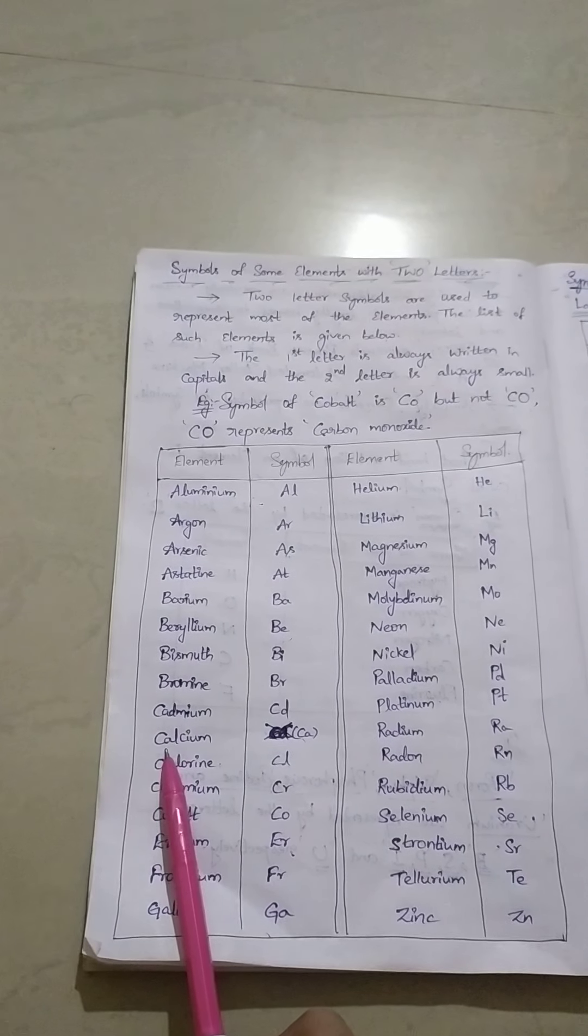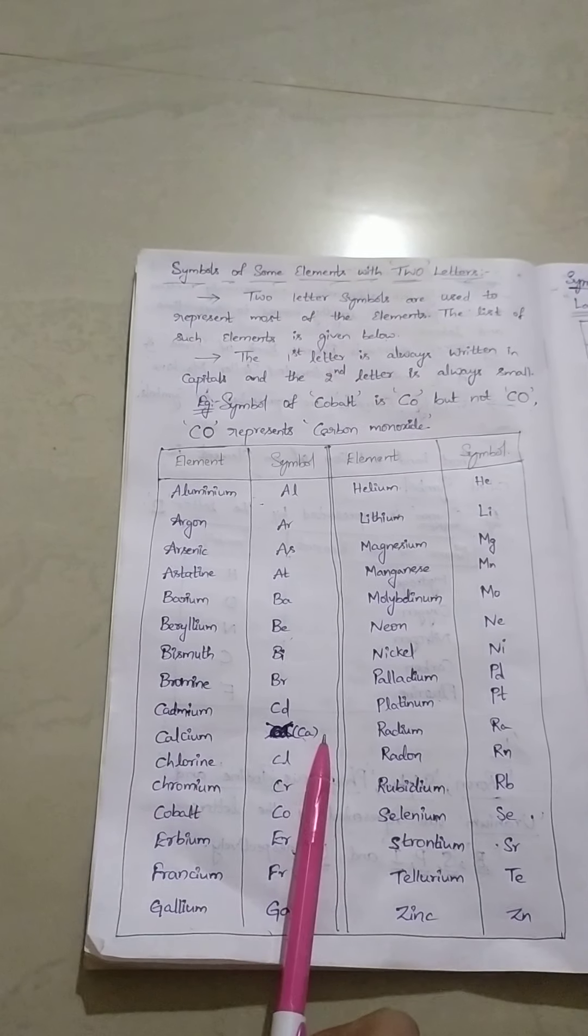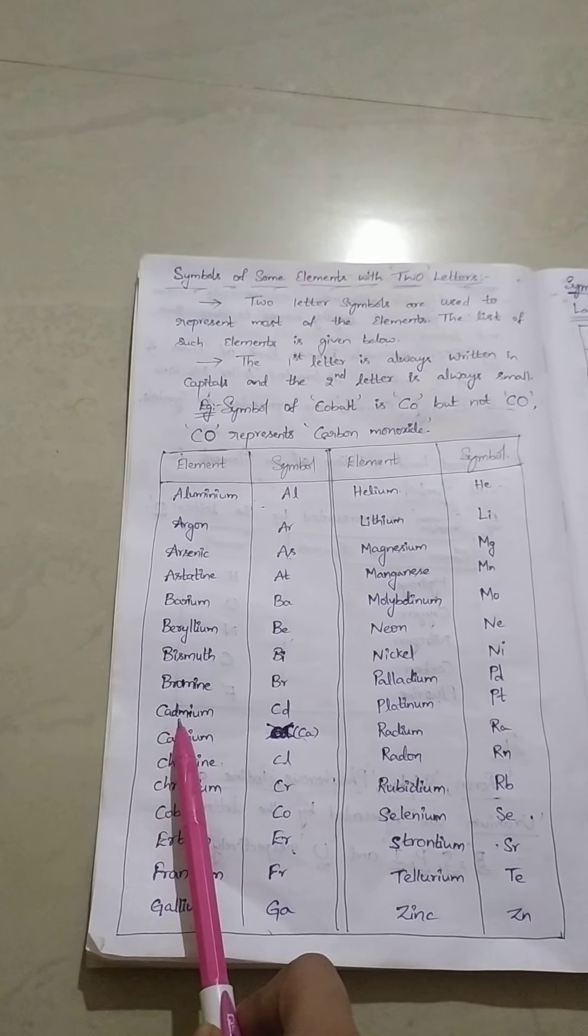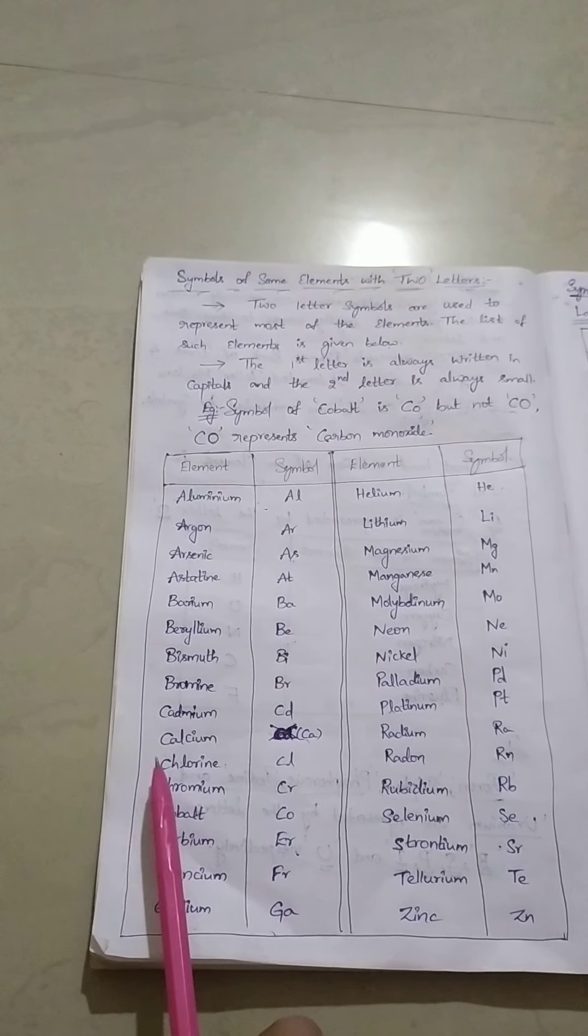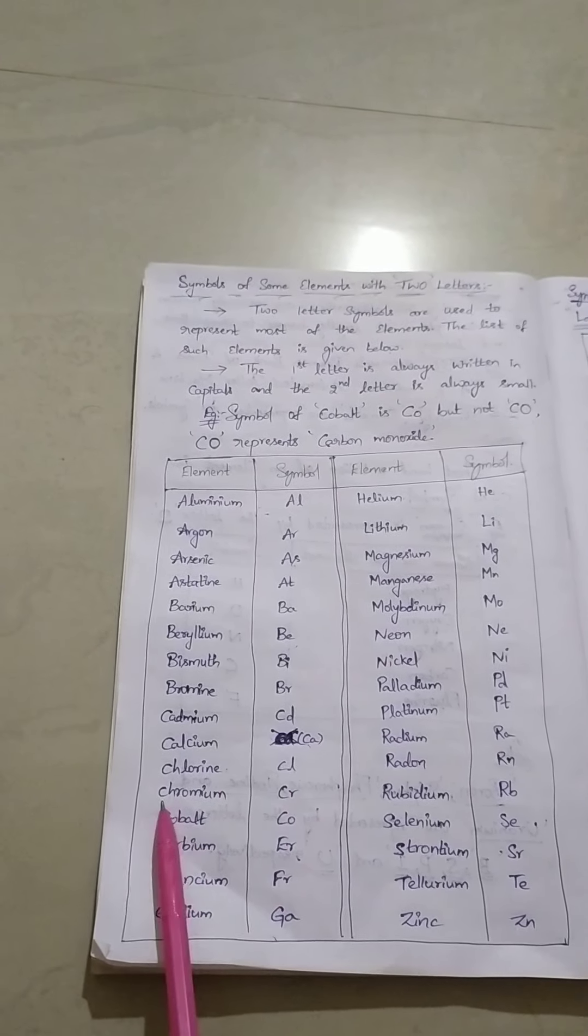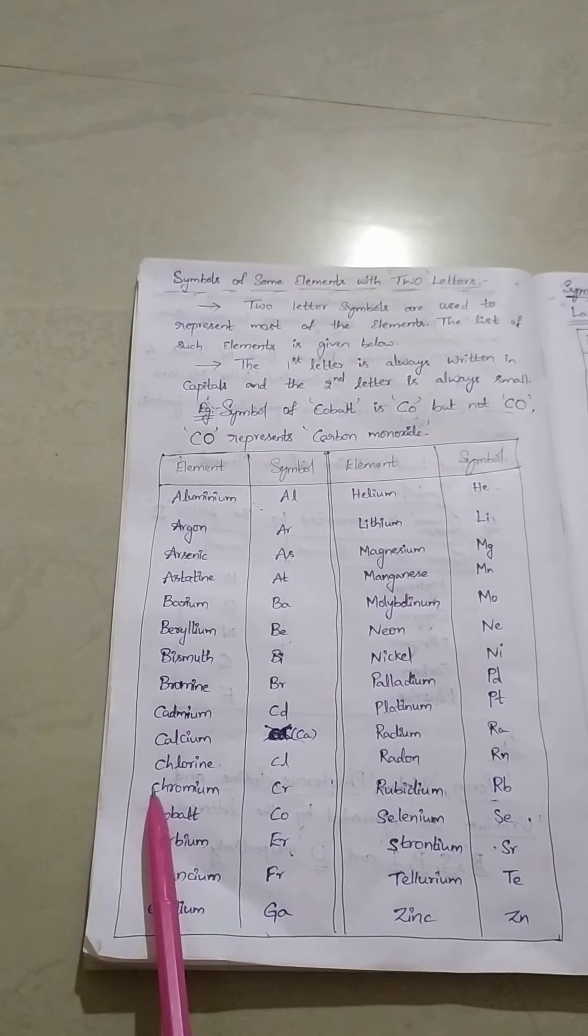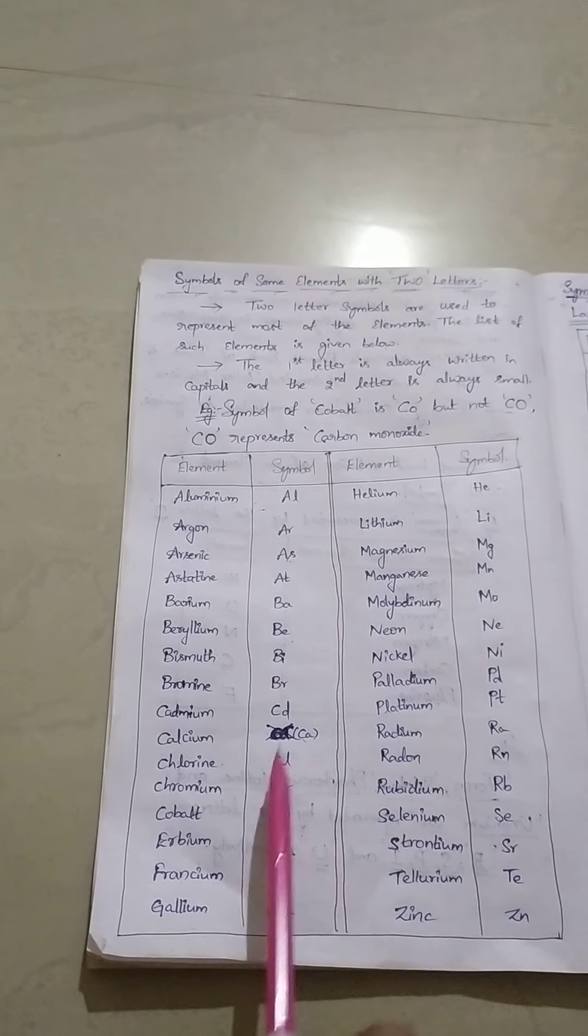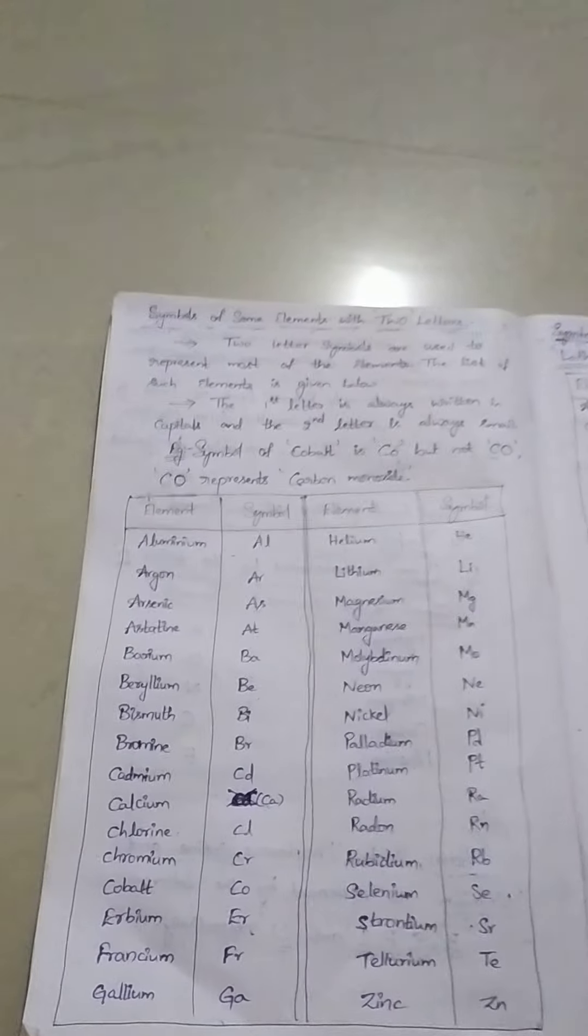Here, for calcium, we will represent CA. For cadmium, CA is common, so CD. For chlorine, CL. Chromium, C-H, CH common. So C and R. Likewise. Hope you got some clear idea.